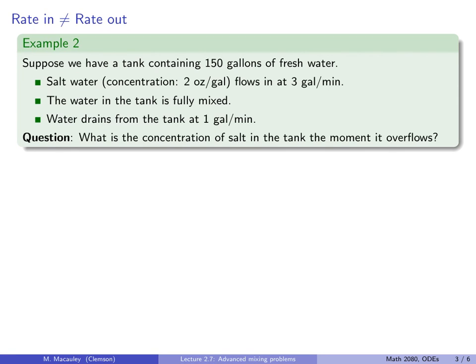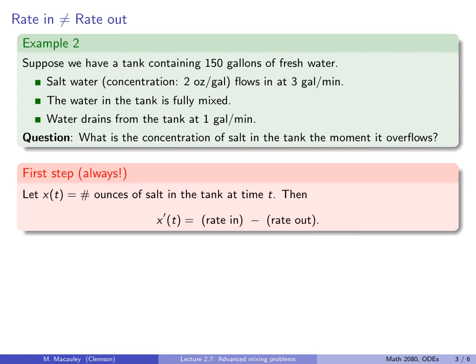Let's do an example with real numbers, just like the problem from the last lecture, except the rate out is going to be different from the rate in. We start with fresh water, 150 gallons. Salt water flows in at 3 gallons per minute with the same concentration as last time. The water in the tank is fully mixed, but now it drains from the tank at 1 gallon per minute. What is the concentration, or the amount, of salt at the moment it overflows? x(t) is always the number of ounces of salt in the tank at time t.